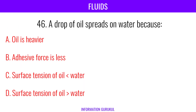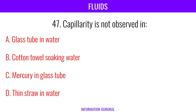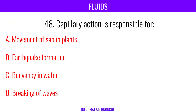A drop of oil spreads on water because the surface tension of oil is less than that of water. Capillary action is not observed in mercury in a glass tube. Capillary action is responsible for the movement of sap in plants.